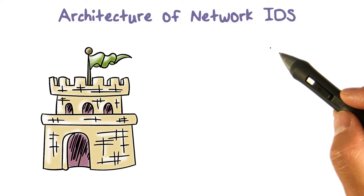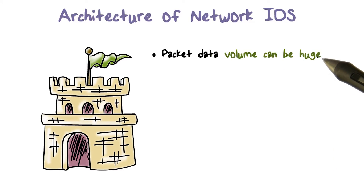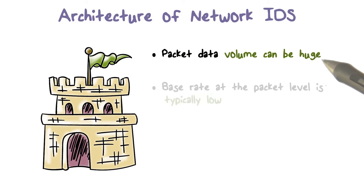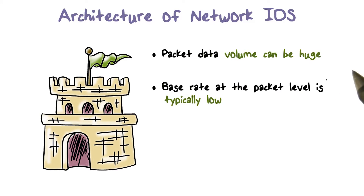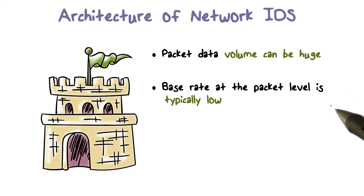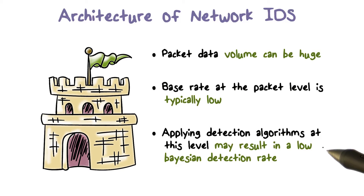With the Bayesian detection rate and base rate fallacy in mind, let's discuss the system architecture of network IDS. Typically, the volume of packet data in a network can be huge, which means the base rate at the packet level is typically low. For example, there can be tens of millions of packets per day in a network, but only a few involved in intrusion activities. Therefore, according to the base rate fallacy, if we apply detection algorithms at the packet level, this may result in a very low Bayesian detection rate.